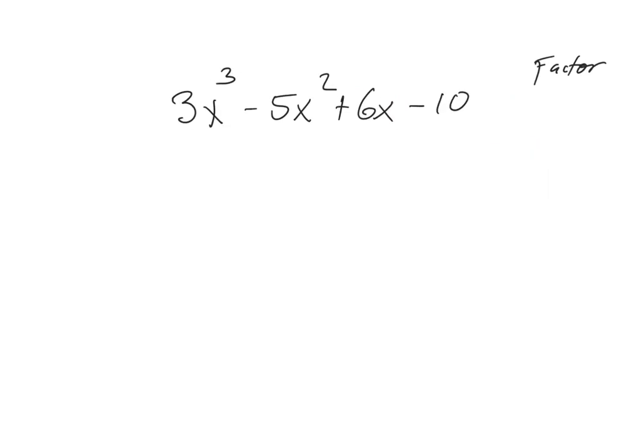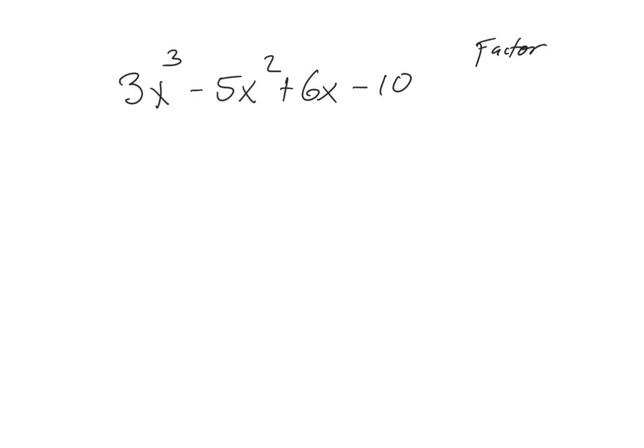We're just doing a couple of these quick review questions before we roll into new content because the next exam isn't going to be that far away. Here, if we're going to factor — there's no equal sign, so I'm not going to be solving, just factoring. First step in factoring is always the greatest common factor. Do they all have something they can be divided by? 3, 5, 6, and 10 do not have any common factors. x cubed, x squared, x, and no x's — also no common factors.